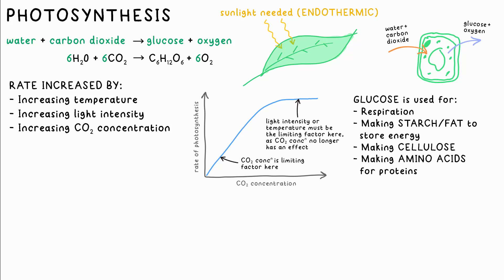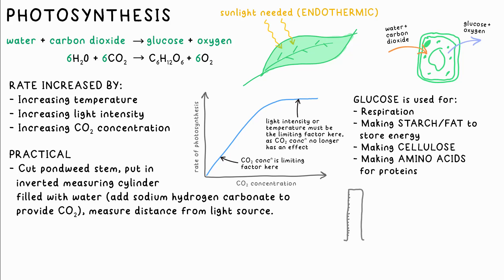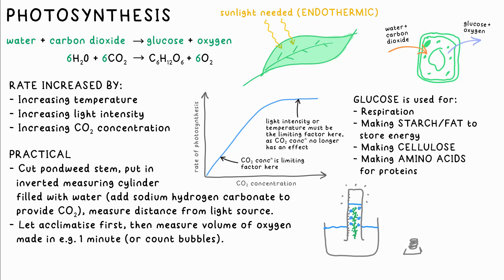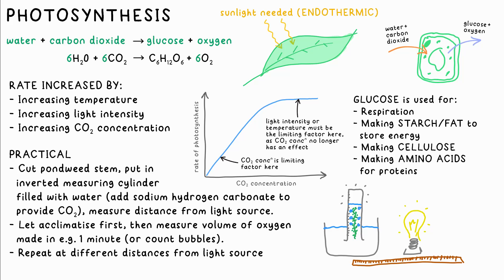Here's the practical on this. We can measure the rate of photosynthesis by submerging pondweed in an inverted measuring cylinder. We measure the volume of oxygen made over time. We can instead count the bubbles, but that's less accurate. The independent variable could be the light intensity, and that's changed by varying the distance from the light source — for example, a lamp.